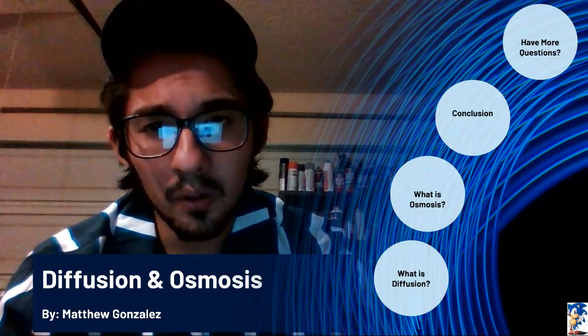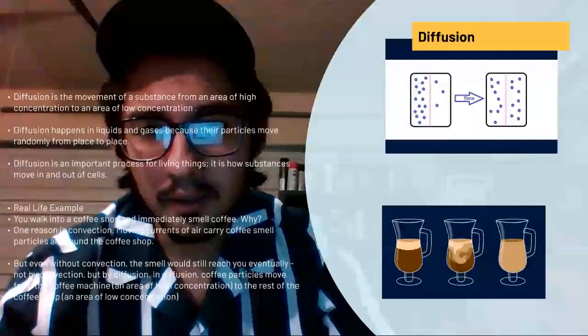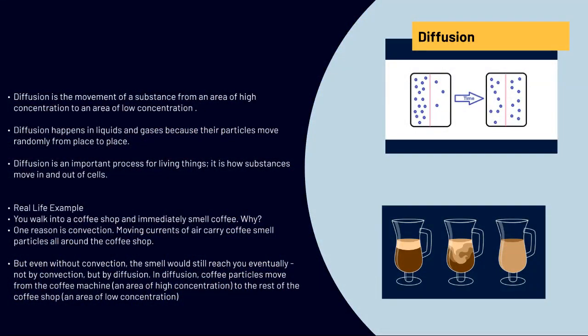First thing we want to know is what is diffusion? Diffusion is the movement of a substance from an area of high concentration to an area of low concentration. If you want a visual, let's look to our right and you can see the diagram.